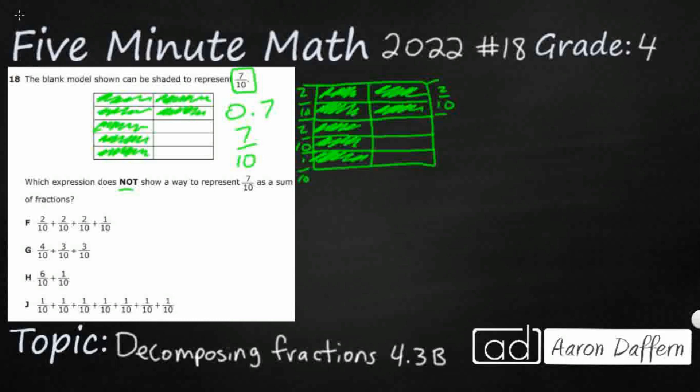When you add fractions, the denominator stays the same all the way across. Now you just add: two plus two plus two plus one makes seven. So that's seven-tenths. Remember, we're not looking for seven-tenths, so F is not our answer.